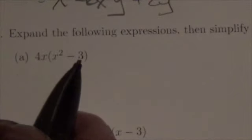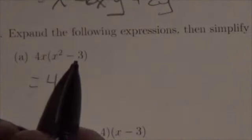All I have to do with this multiplication is distribute it across the subtraction. So 4x times x² is 4x³. 4x times negative 3 is going to be negative 12x.